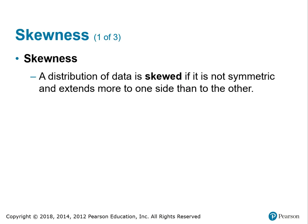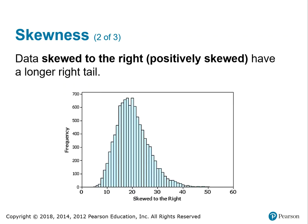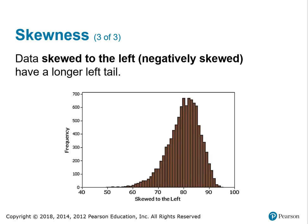Skewness. A distribution of data is skewed if it's not symmetric and extends more to one side than the other. This is a skewed to the right, or positively skewed, data set. It has a long right tail — when it has a long right tail it is skewed to the right. And if it has a long left tail, it is skewed to the left, which we call negatively skewed.